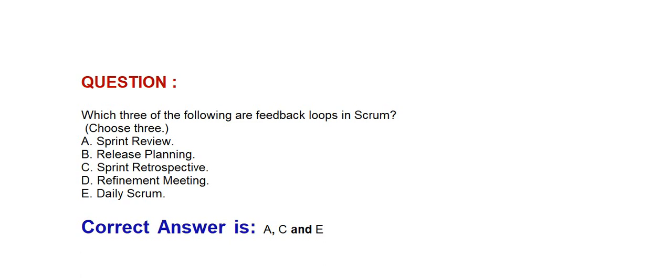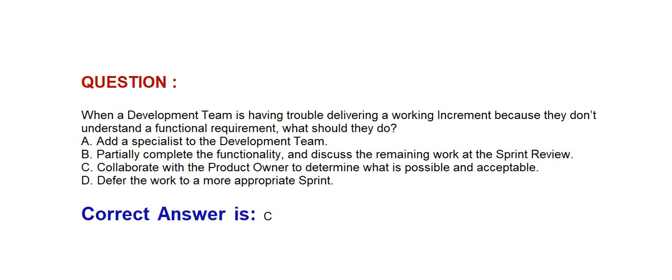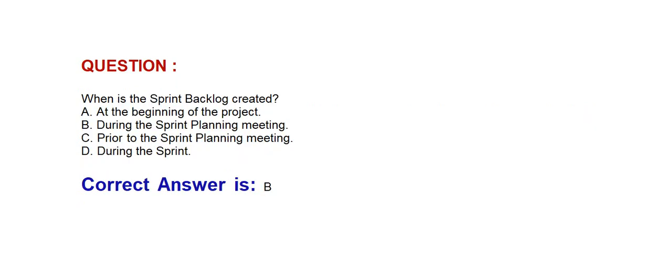Sprint Review, Sprint Retrospective, and Daily Scrum. Next question: When a development team is having trouble delivering a working increment because they don't understand a functional requirement, what should they do? Option A: Add a specialist to the development team. Option B: Partially complete the functionality and discuss the remaining work at the sprint review. Option C: Collaborate with the product owner to determine what is possible and acceptable. Option D: Defer the work to a more appropriate sprint. Correct answer is Option C: Collaborate with the product owner to determine what is possible and acceptable.